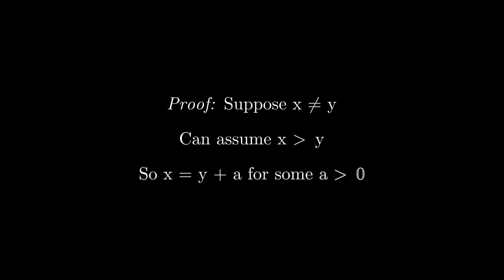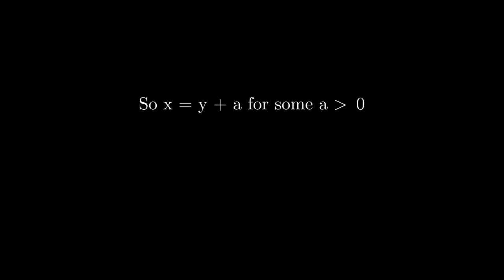The proof is simple. Suppose that our conjecture is false, so x is not the same as y. We can assume that x is greater than y. Well, we can then say that x is y plus some positive value a. But, according to the rules of our game, x-y must be less than a, implying that x is less than y plus a.